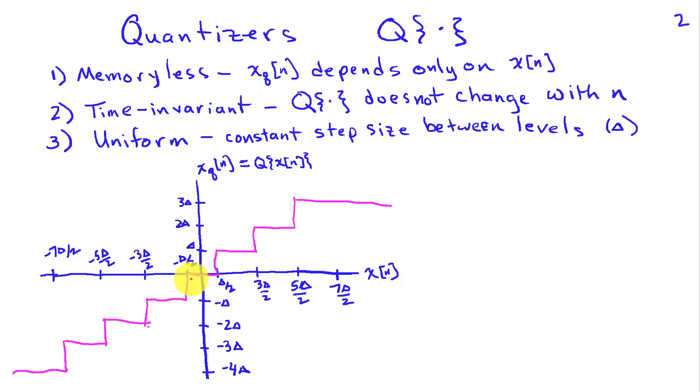So for example, if the input to the quantizer x of n is between minus delta over 2 and plus delta over 2, we get zero for the quantized output. On the other hand, if it's between delta over 2 and 3 delta over 2, we're going to get delta as an output. So we're rounding to the nearest level, what I've illustrated here.